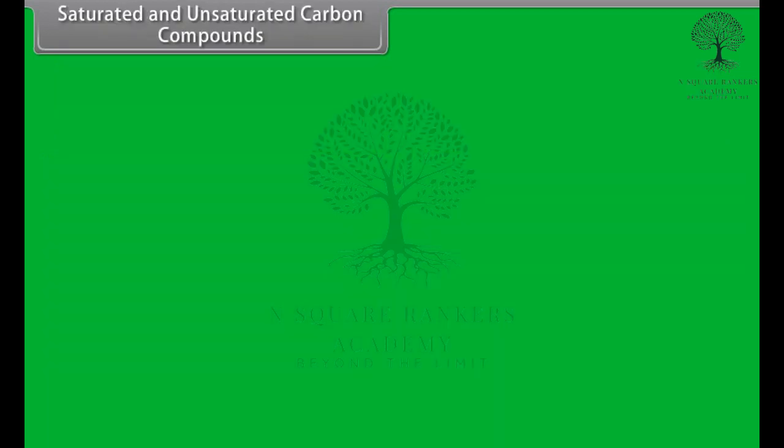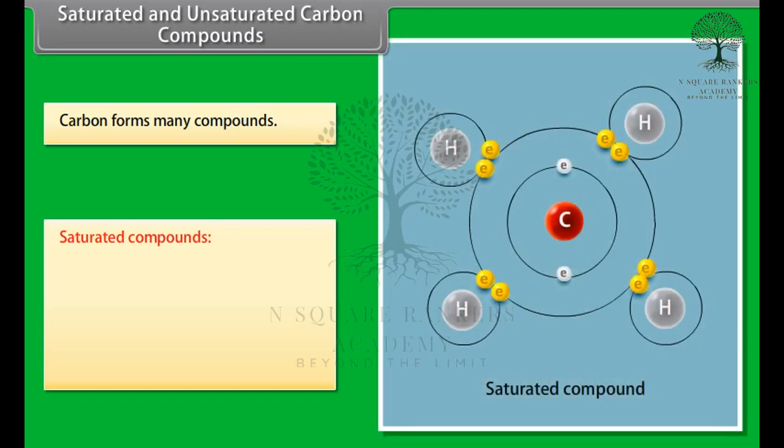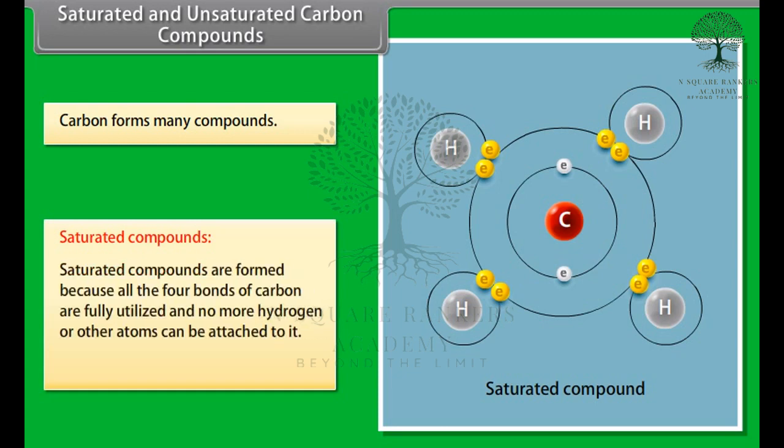Saturated and unsaturated carbon compounds. Carbon forms many compounds. The two main types of compounds are saturated compounds and unsaturated compounds. Saturated compounds are the carbon and hydrogen compounds where the adjacent carbon atoms contain only one single covalent bond, known as saturated hydrocarbons. All the four bonds of carbon are fully utilized and no more hydrogen or other atoms can be attached to it. These are known as alkanes.